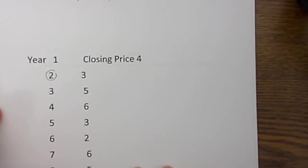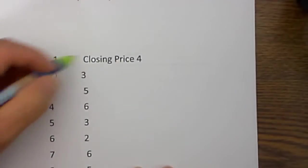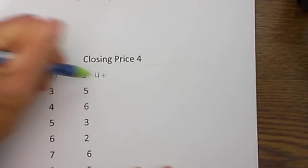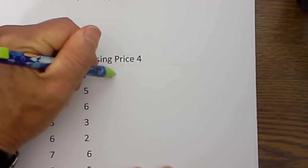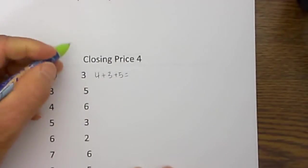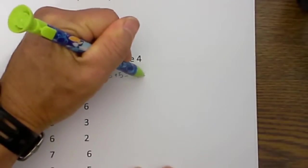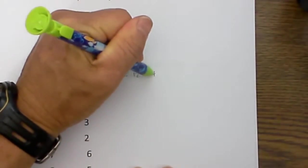But I am going to do a 3 year moving average and year 2 is right in the center. So I will take an average of those 3 years. It will be 4 plus 3 plus 5, and that equals 12, and 12 divided by 3 is 4.